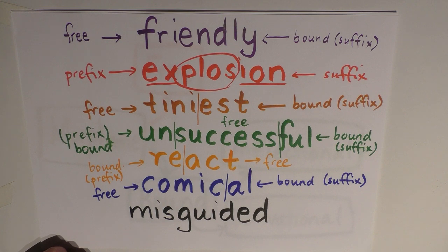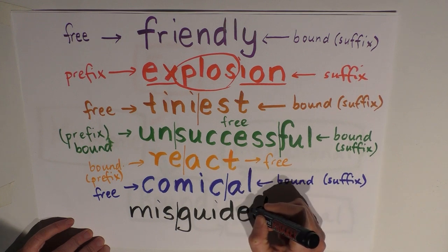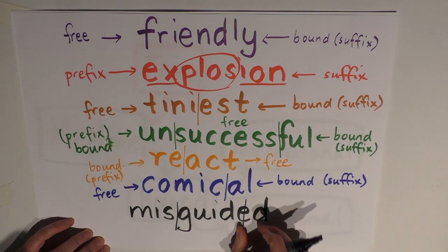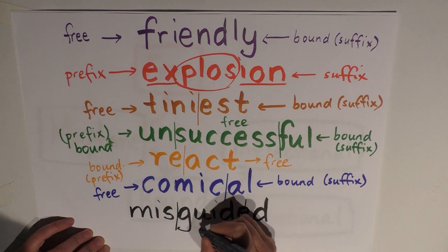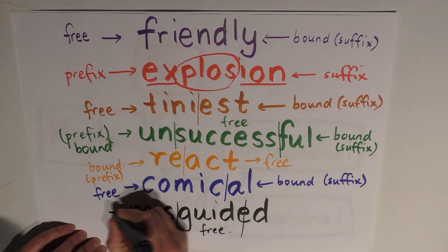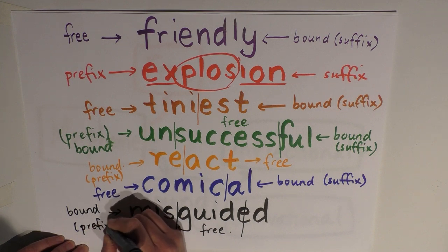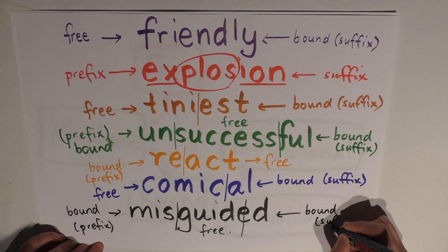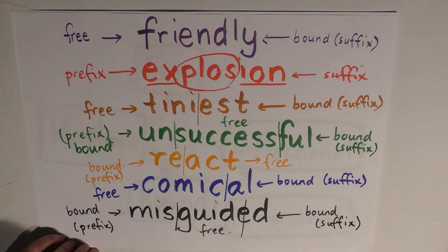And the last one we're going to look at today is the word 'misguided.' I think I can see three morphemes in this one. We have 'mis,' we have 'guide,' and we have 'ed.' 'Guide' is our free morpheme here. We have our bound morpheme here, which is a prefix. And you'll notice the prefixes are all down the left-hand side of the page. And then we have another bound morpheme at the end. This time, it's a suffix. And it's giving a functional role of telling us that it's in the past tense. So that's what that morpheme is doing.